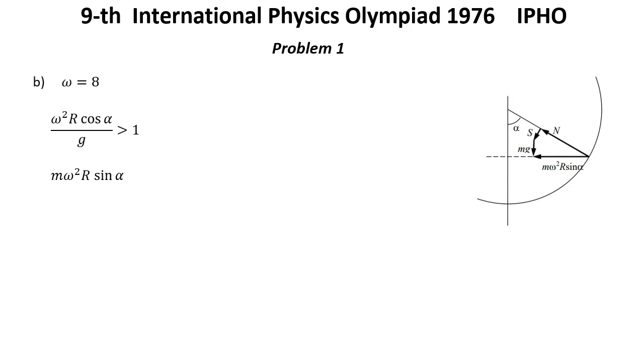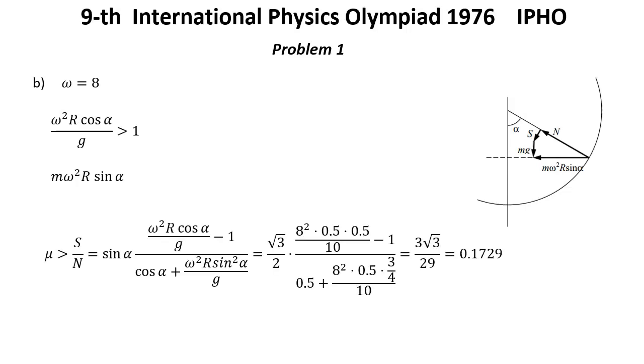The conditions for the minimum coefficient of friction is next one. Mu must be greater than S over N, which is this expression now. And after putting new numbers we have 0.1729. So that was the solution for question B.